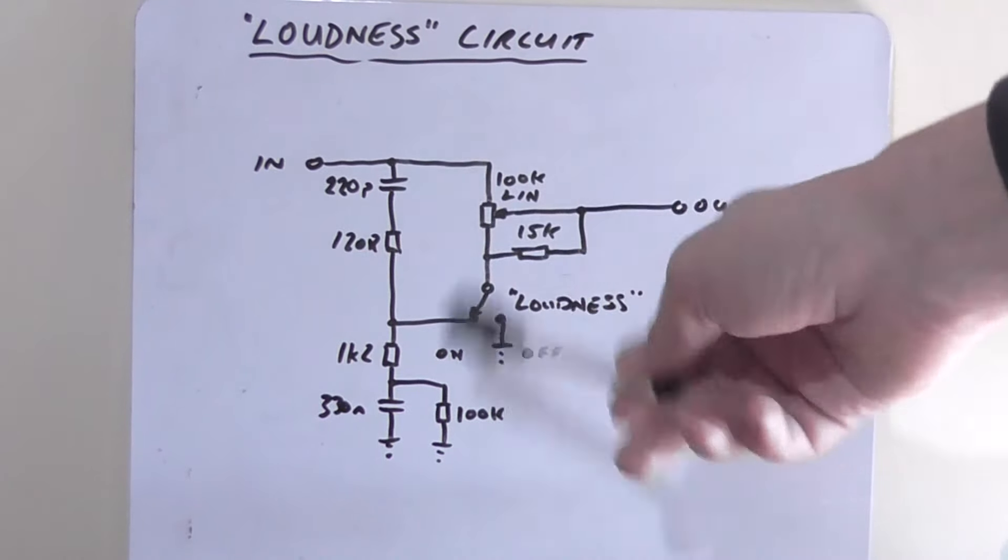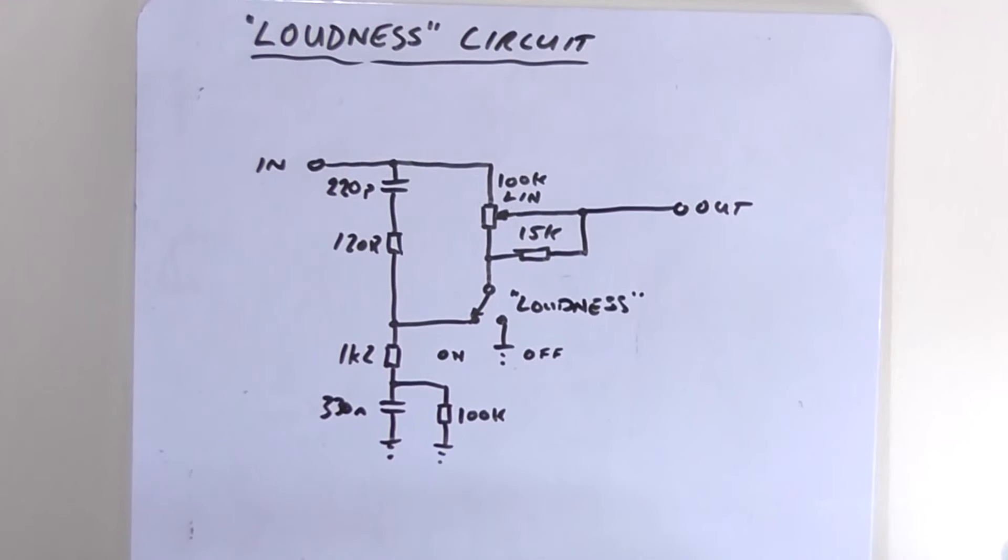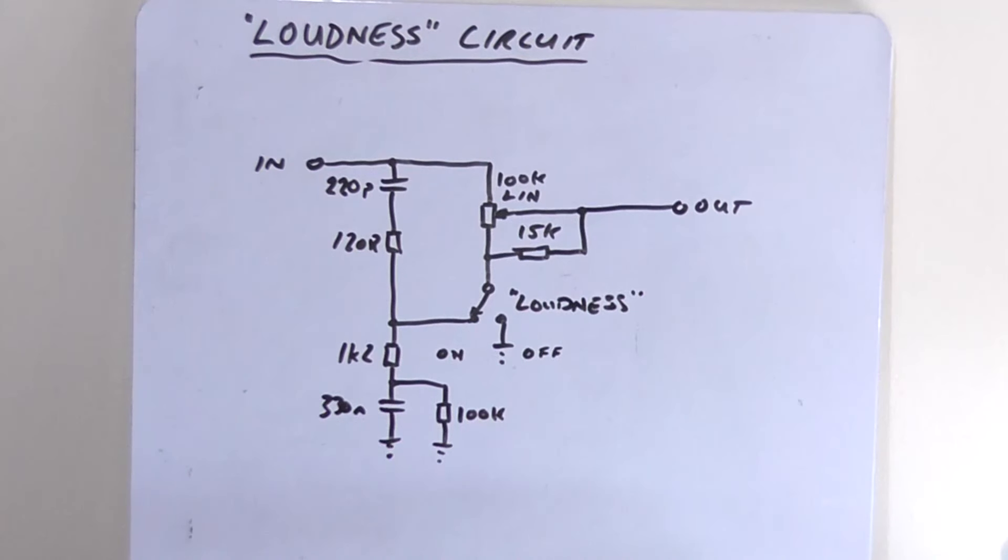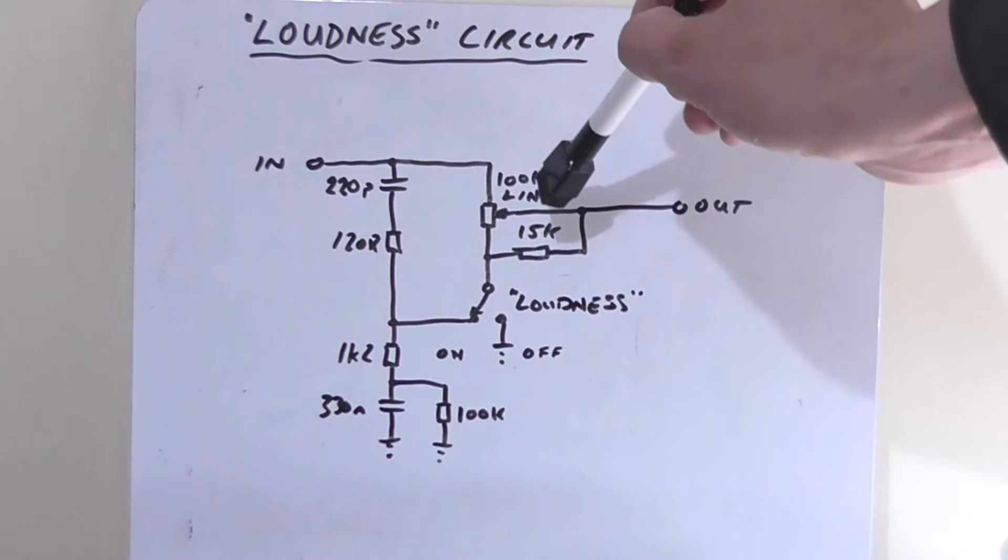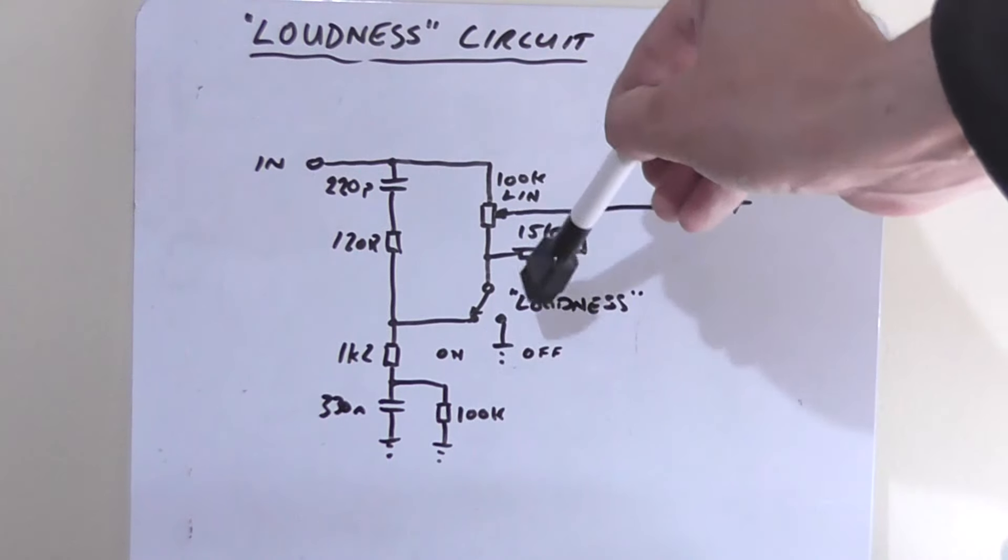I found this circuit online, and it's a simplified version of a loudness circuit. A lot of the high-end amplifiers like Yamaha, Sony, Pioneer, Technics and all that, they used a rotary potentiometer which actually had four pins, or actually eight because it was stereo. So it had actually two wipers, and the compensation circuit went on to the second wiper of the pot.